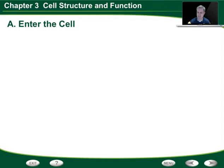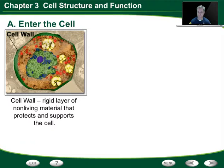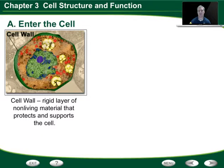First, we have to imagine ourselves on a journey into the cell. Every cell has a structure that provides support and security so that organisms can't just come in. Some cells have what's called a cell wall. A cell wall is a rigid, non-living material that protects and supports the cell. We'll see this in plant cells, where rigid cell walls give structure to the plant overall.